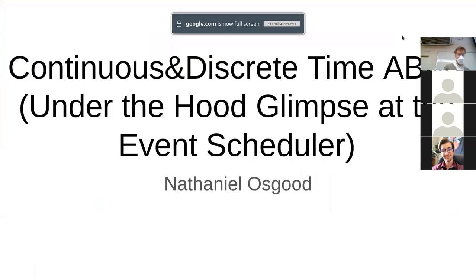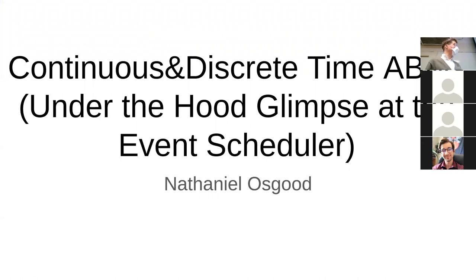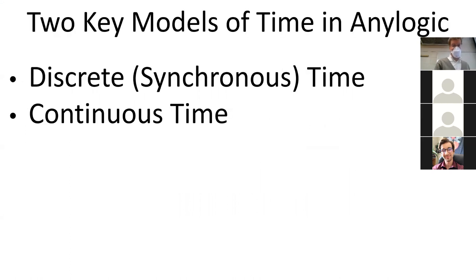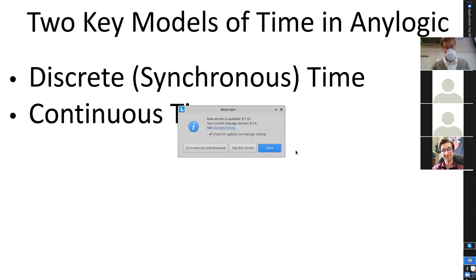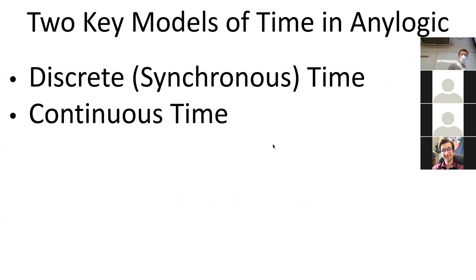Within AnyLogic we have several choices in modeling agent-based models. The issue here is not AnyLogic specifically — agent-based modeling conceptually provides two major different ways of representing time. Some good names for them would be discrete or synchronous time on one hand and continuous time on the other. Does anyone have a sense of what is conveyed by the word synchronous?